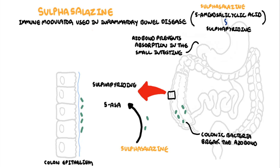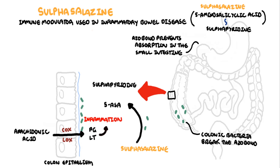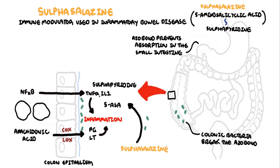In inflammatory bowel disease and other rheumatological conditions, arachidonic acid formed from cell membranes is converted to prostaglandins and leukotrienes via the enzymes cyclooxygenase and lipoxygenase. Prostaglandins and leukotrienes essentially promote inflammation. Inflammation in a particular tissue stimulates cells and their transcription factors, including nuclear factor Kappa B. When activated, it promotes the production of pro-inflammatory cytokines, including TNF-alpha and interleukin-1, attracting more immune cells such as neutrophils to the area.